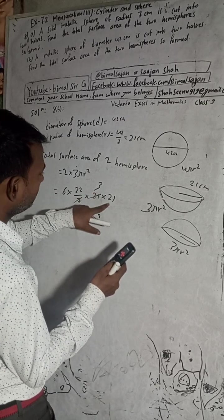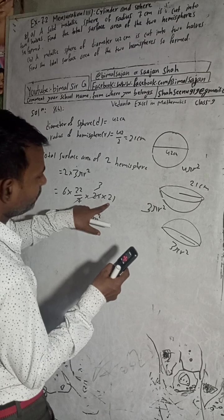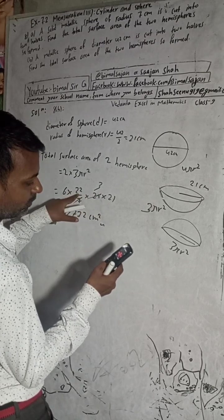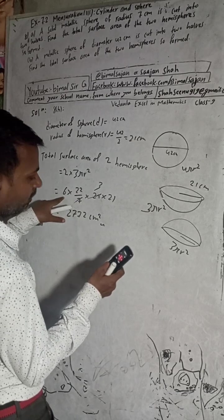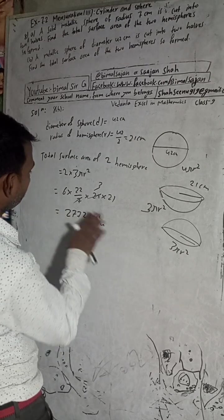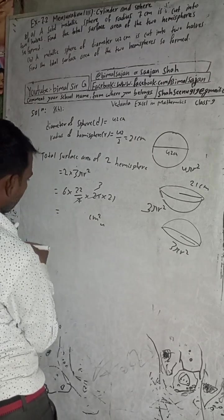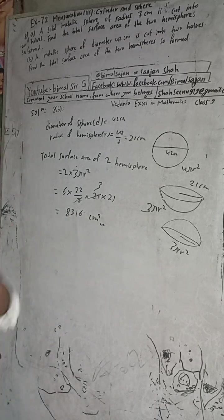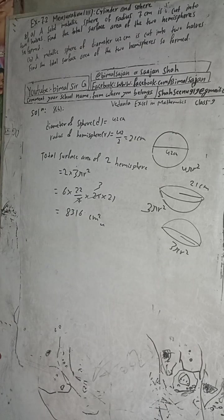Calculating: 21 into 3 into 22 into 6. This gives us 8316. Yes, this is the correct answer, 8316 cm².